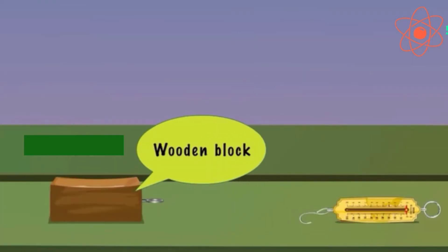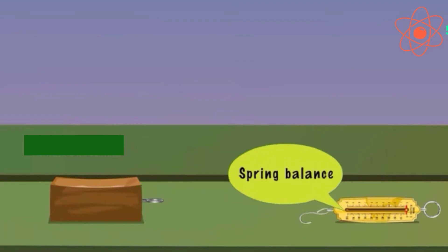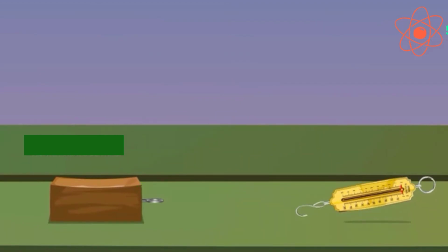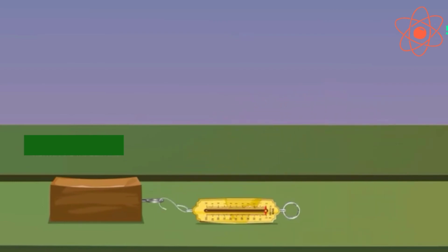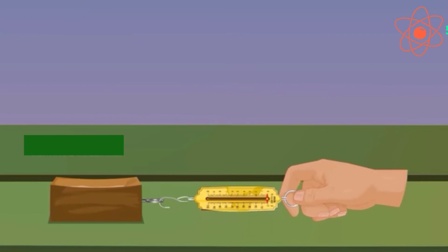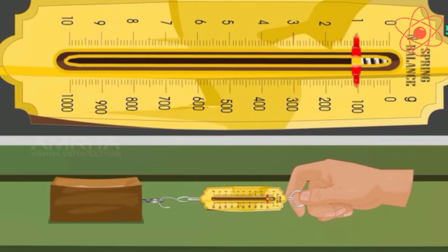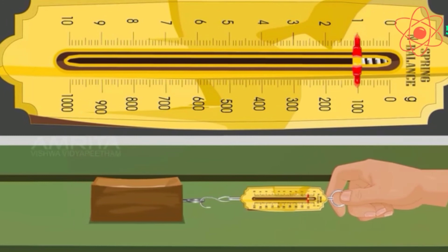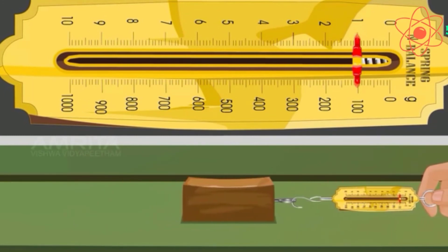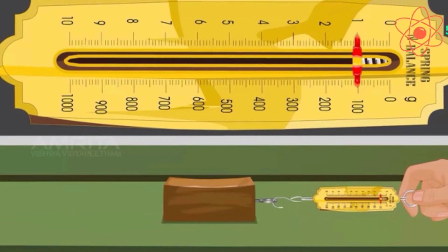Let us understand this with the help of an activity. Take a rectangular wooden block with a hook attached to one side, placed on a wooden table having a rough surface. Attach a spring balance to its hook and pull the spring balance in the horizontal direction. Pull until the wooden block just starts to move. Note the reading on the spring balance at this particular point — this gives the value of frictional force. By this method we can find the force of friction for any object on any surface.